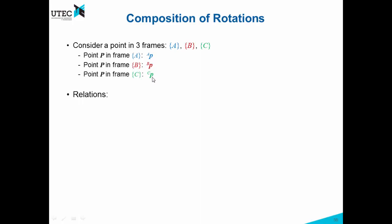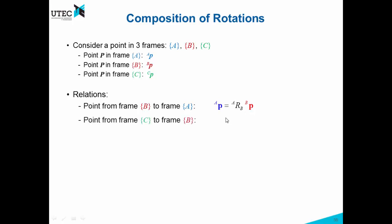The relations between these points are the following. If we want the point from frame B to frame A, we multiply it with the rotation matrix that represents frame B in frame A. If we want to represent the same point from frame C to frame B, we multiply it with a rotation matrix that represents frame C in terms of frame B.